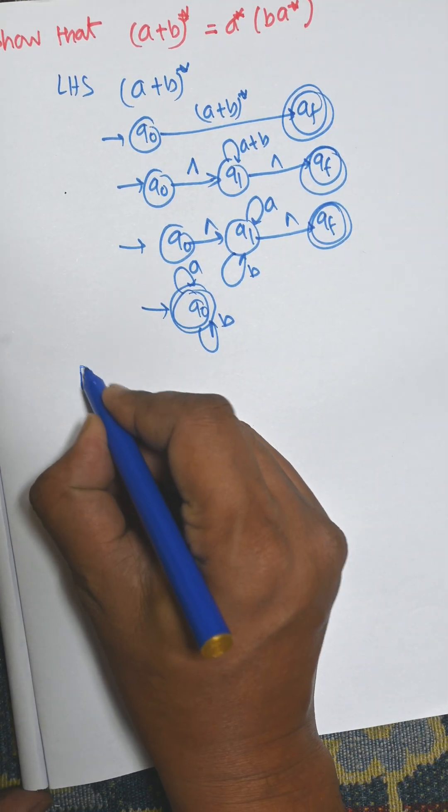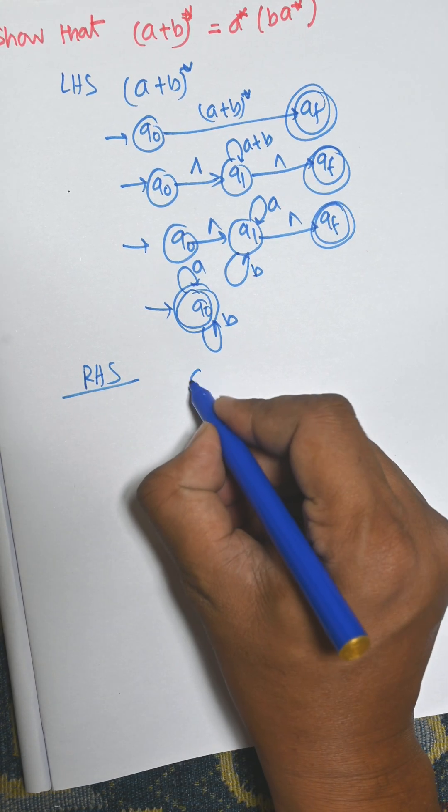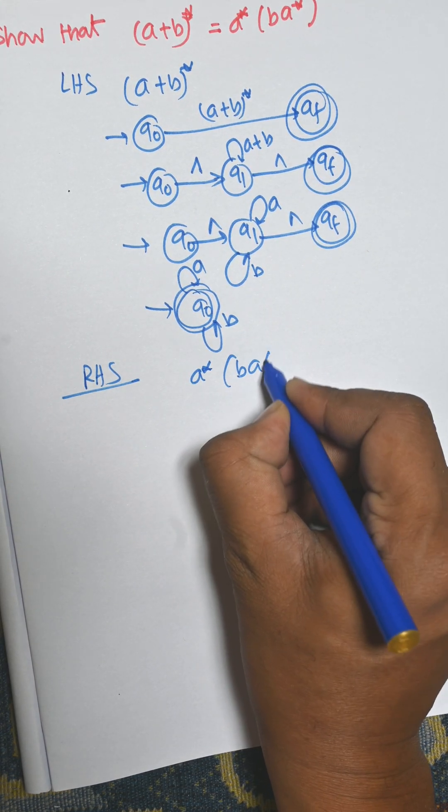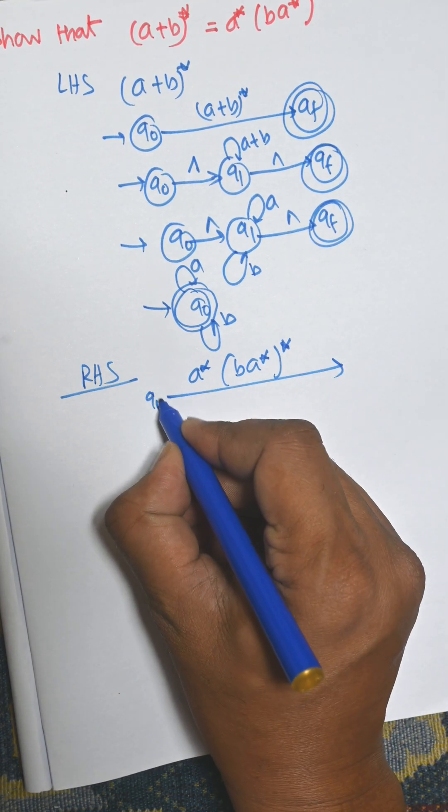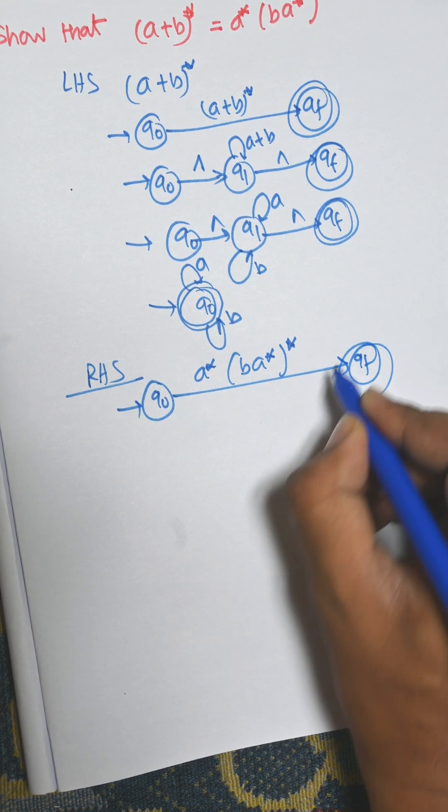Now draw another diagram for RHS that is a*, ba*, then whole star. Now consider this one as an input that is q0 to qf. Qf is the final state.